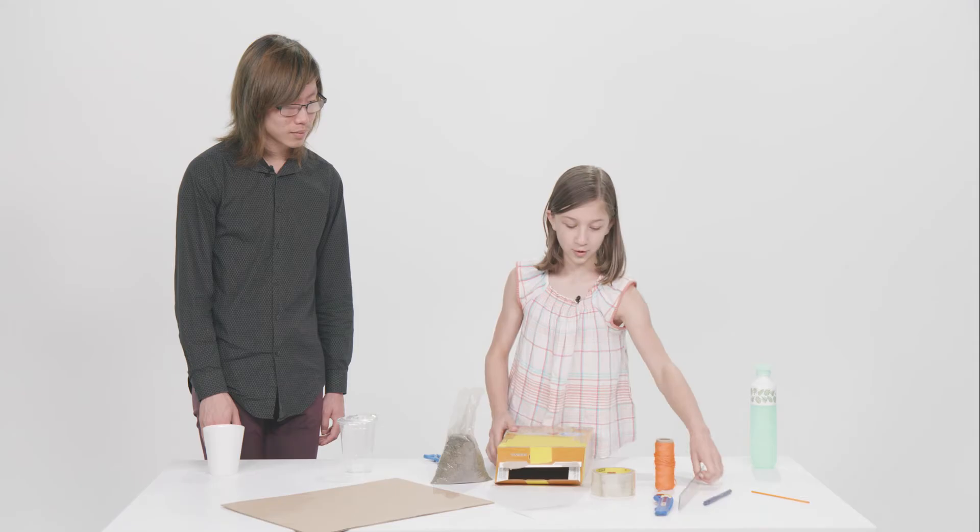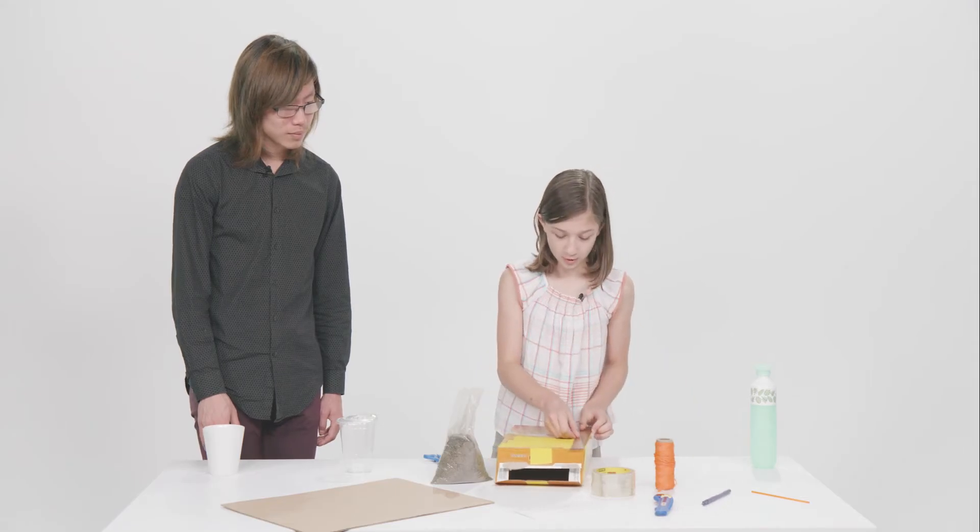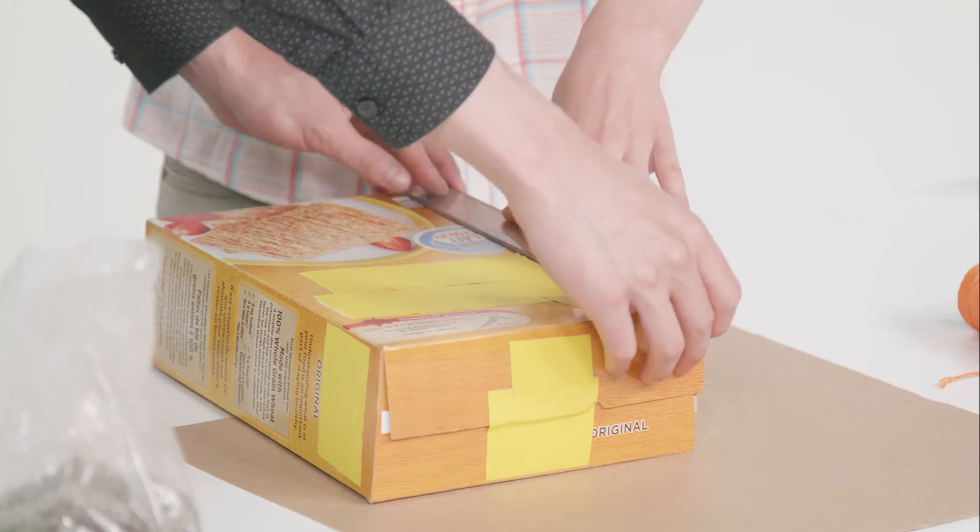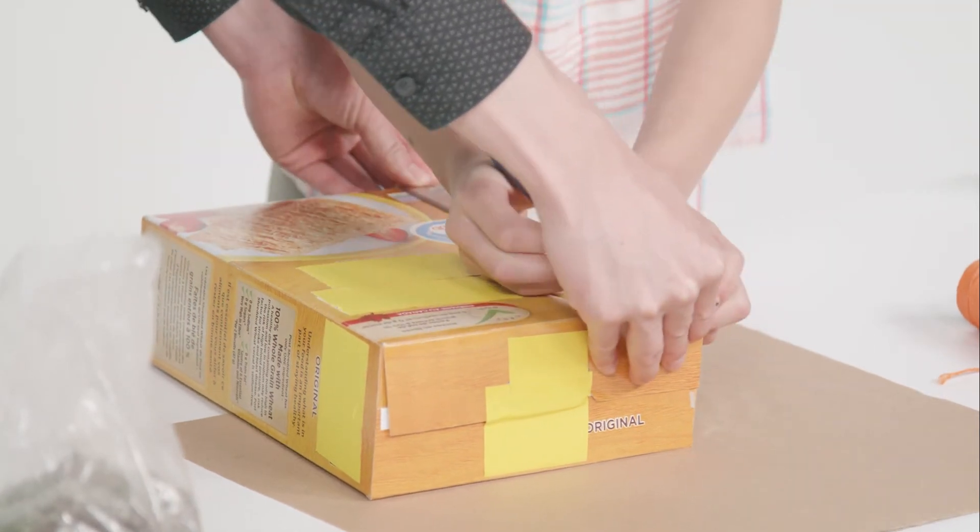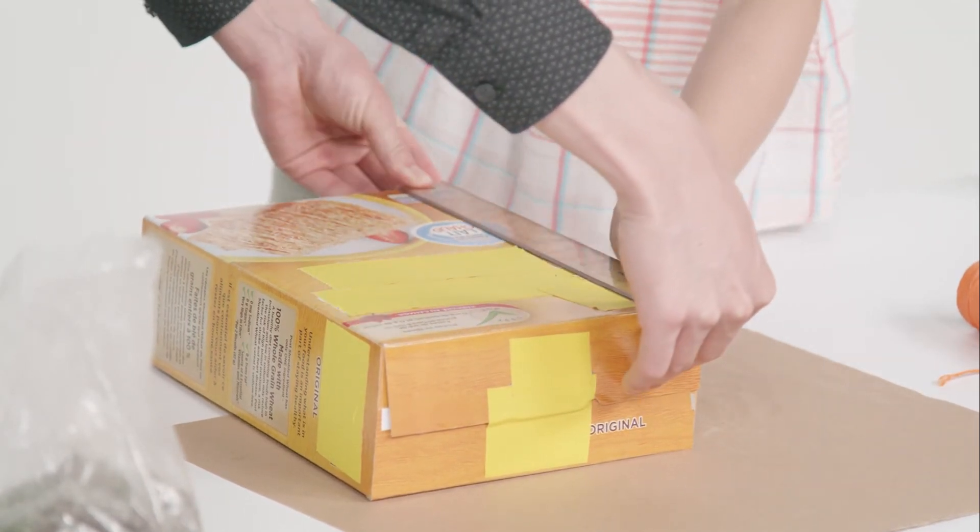So first, we're going to take our cereal box. We have our ruler, and we're going to measure here, here. So Kevin, can you please hold the ruler? I'm just going to make it even on both sides of the cereal box. There.